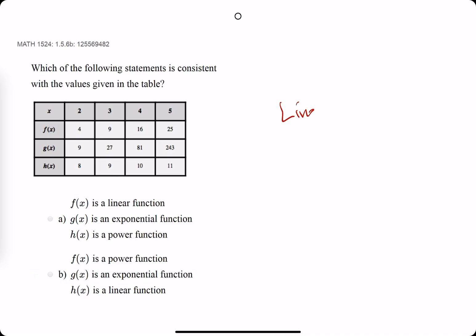We know that for a linear function, we're looking for addition to be the same between each value in the table. For exponential, we're looking for multiplication to be the same between each value.